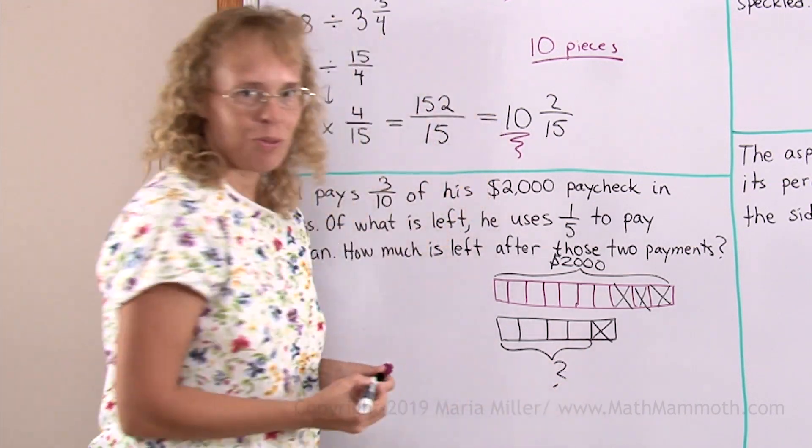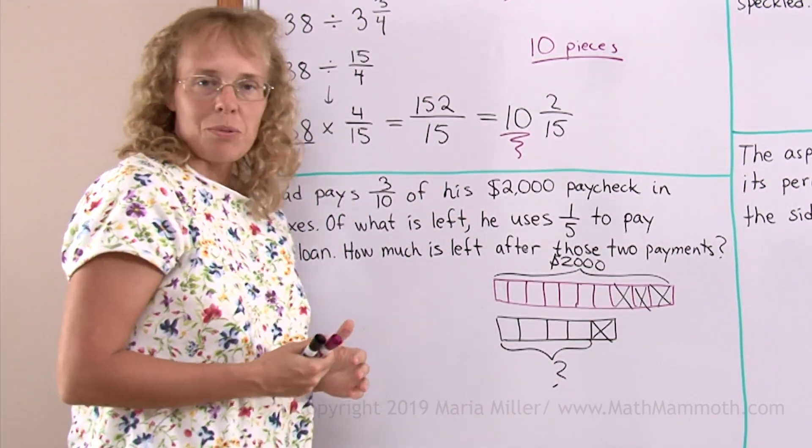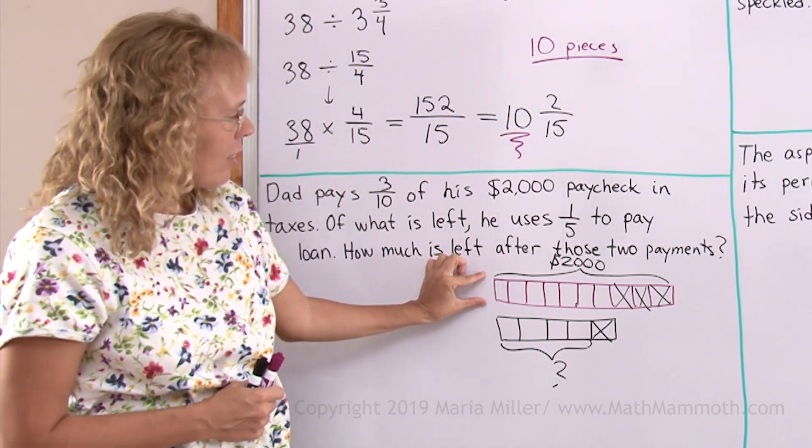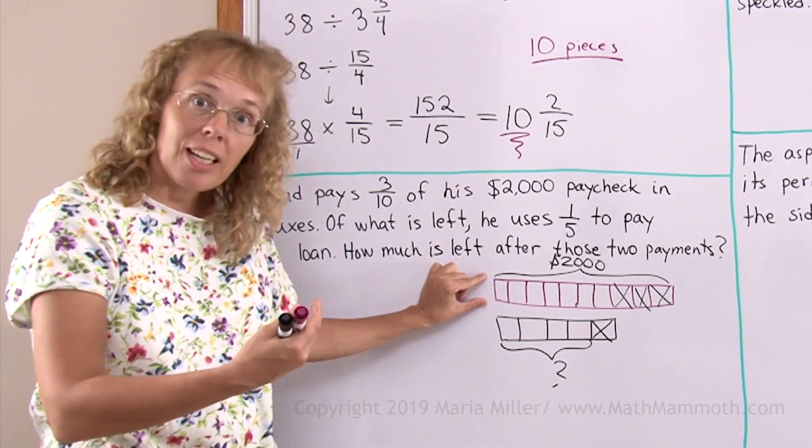So this is our unknown. So we will start out with this first part here, the two thousand dollars, and figure out how much he has left after taxes.